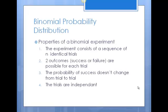Our next distribution is the binomial probability distribution. It has four characteristics: the experiment consists of a sequence of n identical trials; there are two potential outcomes (one labeled success, one failure); the probability of success does not change from trial to trial; and each trial is independent of one another — just because you flipped heads the last three times does not mean you will flip heads again.